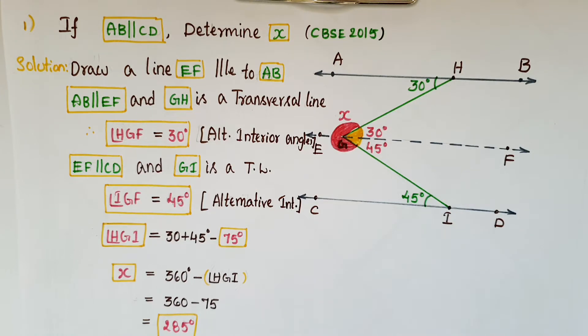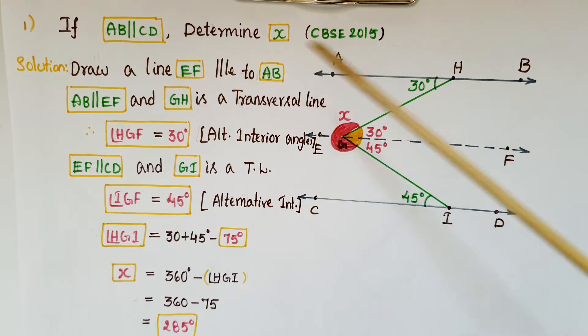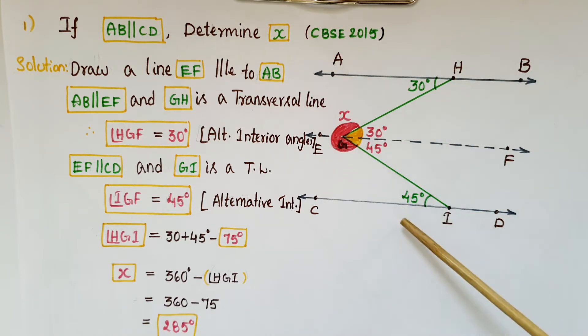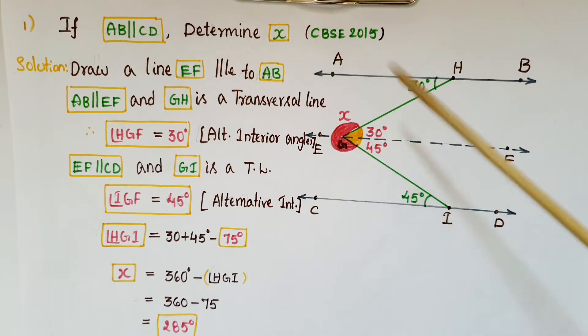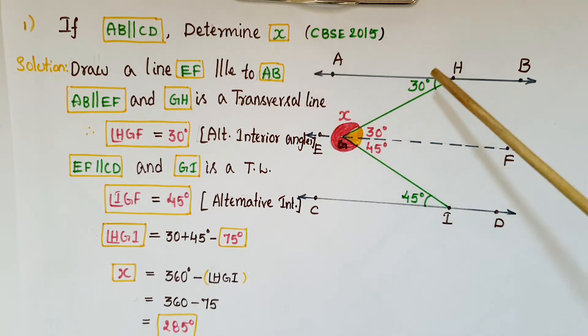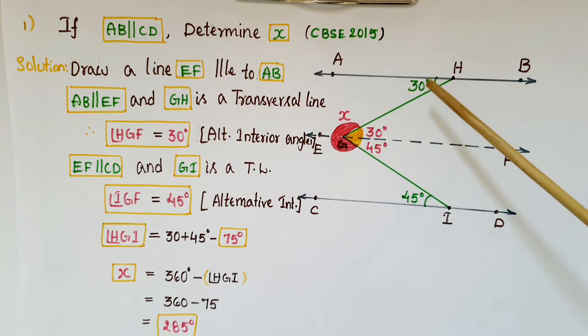Hello everyone, today I am going to tell the solutions of old CBSE questions which are based on transversal lines. The first one is: if AB is parallel to CD, determine the value of x. Here, two angles are given.